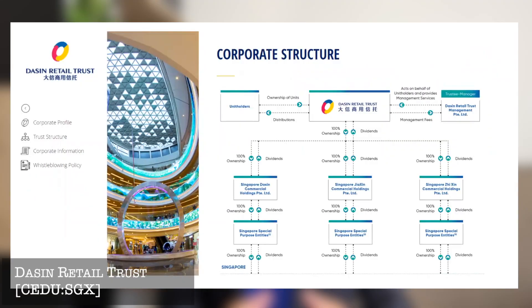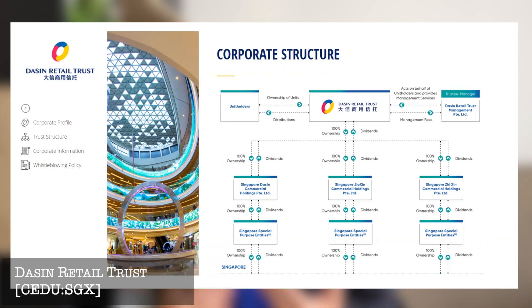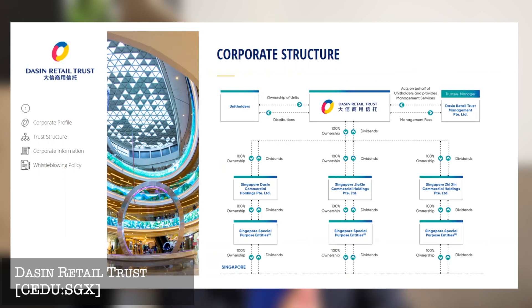The next two business trusts are more related to REITs and are always mixed together and considered as REITs, because they are property trusts — their business is mainly owning properties and collecting rental. The first is Dasin Retail Trust, a property trust that IPO'd in Singapore around 2017. Their main assets are practically shopping malls in China and they collect rental income in the Guangdong area, which is why many people take them as REITs. But they are registered as a business trust, meaning the trustee and the manager is the same person, compared to other REITs where the trustee and manager are separate entities.